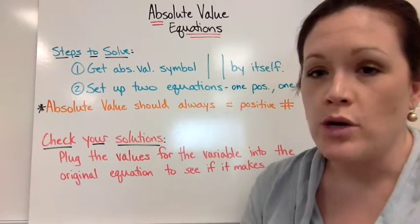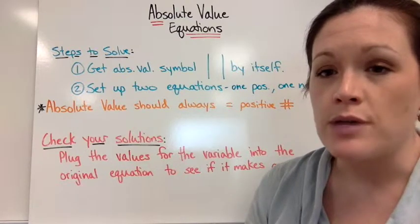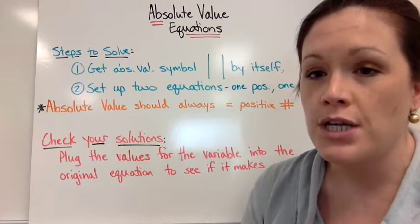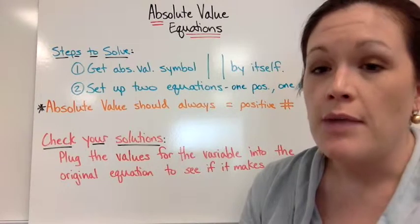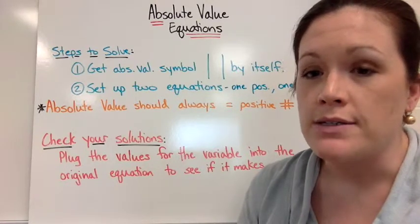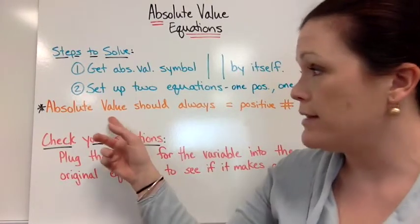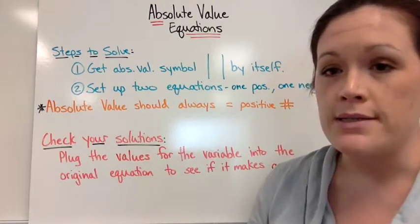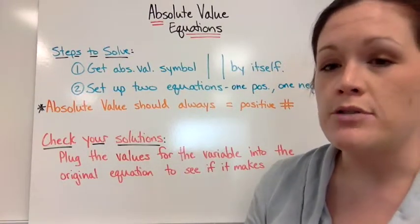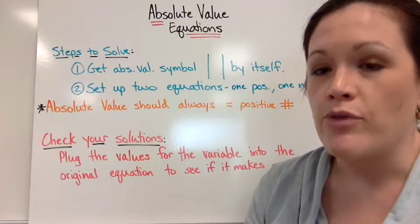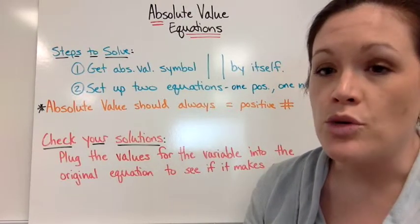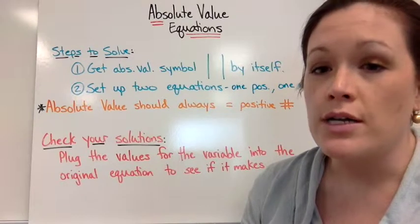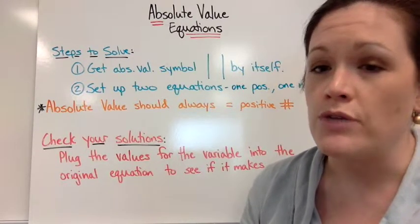Then you want to set up two equations. When we look at our examples, I'll point out what I mean when I say set up one positive equation and one negative equation. But as you're solving to get the absolute value symbol by itself, keep in mind that absolute value should always be equal to a positive number. So if you end up with absolute value of something equal to a negative, before you start setting up those equations, you already know that's not possible and you can conclude that there would be no solution.